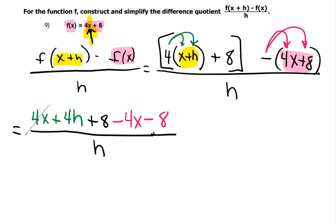And then some stuff is going to cancel out. This 4x will cancel a minus 4x, and a plus 8 will cancel a minus 8. So all we're left with in the numerator is the 4h over an h. And then the h over h cancels out, so we're left with 4, and that's my answer for number 9.